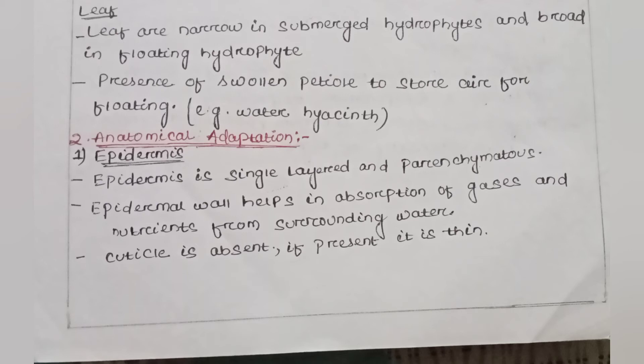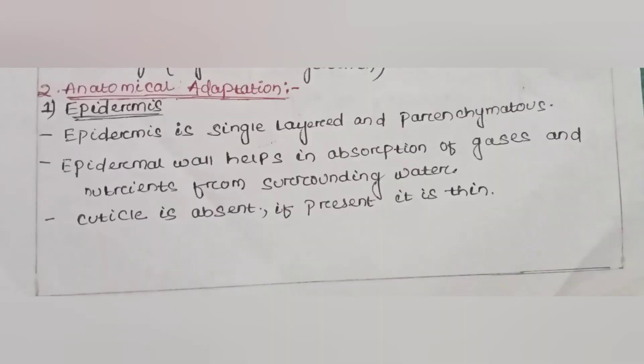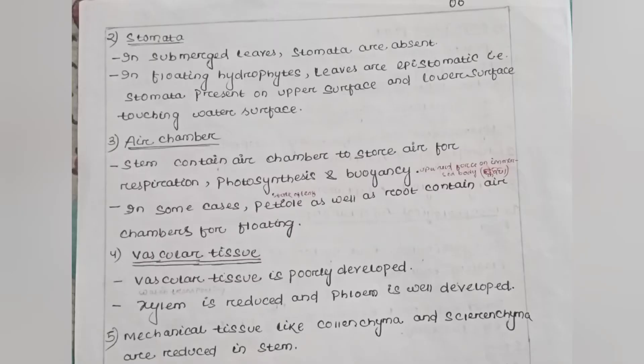The cuticle is absent; if present, it is thin. The cuticle is found on the outer portion of the leaf but is generally absent in hydrophytes. Regarding stomata: in submerged leaves, stomata are absent. In floating hydrophytes like Trapa, the leaves are epistomatic — meaning stomata are present only on the upper surface, while the lower surface touches the water.